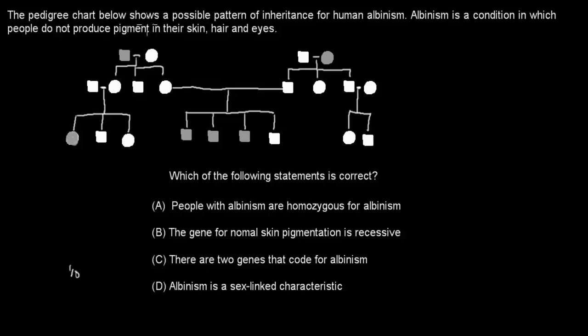Next one is the pedigree chart below shows a possible pattern of inheritance for human albinism. Albinism is a condition in which people do not produce pigments in their skin, hair and eyes. Which of the following statements is correct? A. People with albinism are homozygous for albinism. B. The gene for normal skin pigmentation is recessive. C. There are two genes that code for albinism. D. Albinism is sex-linked characteristics. Are we ready to turn the question?